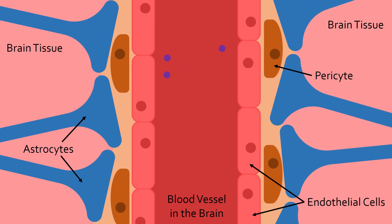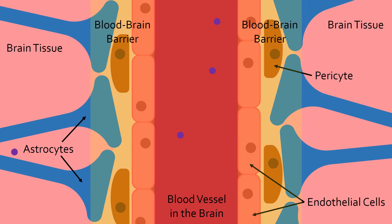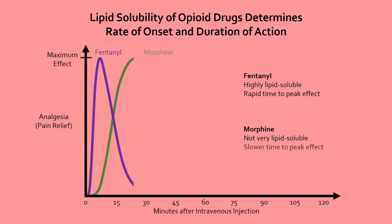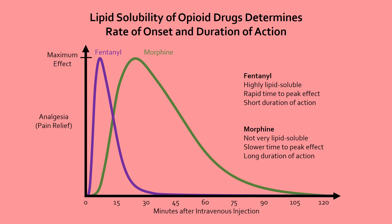First, the drug must leave the blood and enter your central nervous system. To do so, it must cross the highly selective blood-brain barrier. Smaller, lipid-soluble drugs can more easily cross this barrier and start causing their effects earlier than larger, water-soluble drugs. For example, fentanyl is much more lipid-soluble than morphine and so crosses the barrier much faster, which is why fentanyl's effects are almost immediate compared to morphine. Conversely, fentanyl can just as easily leave the central nervous system, so it has a shorter duration of action.